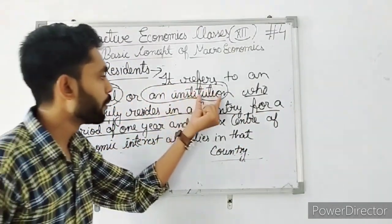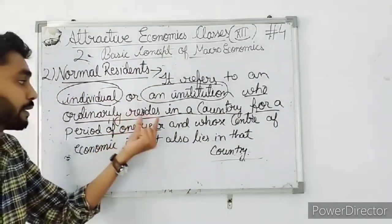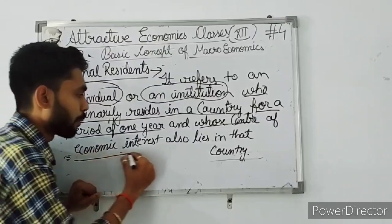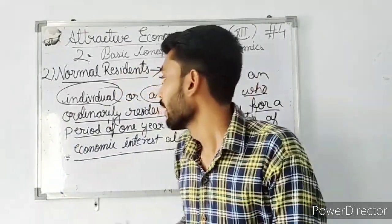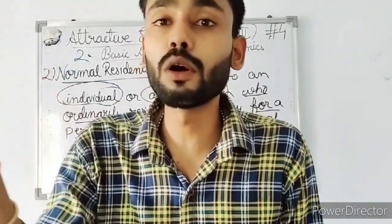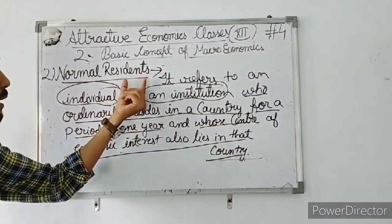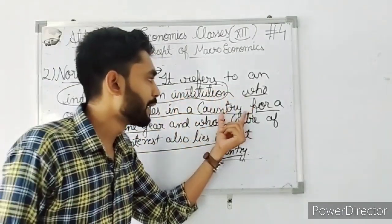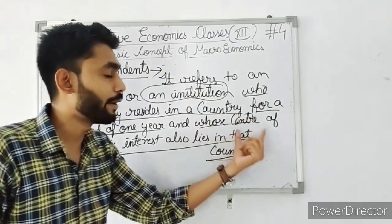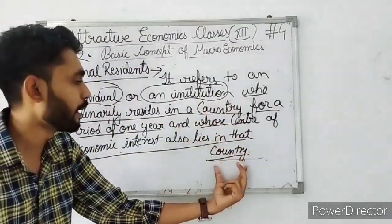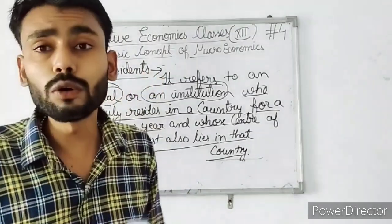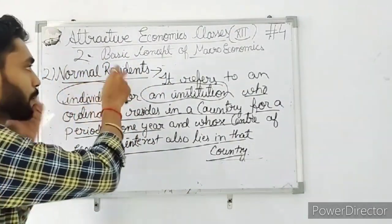And whose center of economic interest also lies in that country — meaning the job or economic activity is in that country. So if these two conditions are fulfilled — residing for one year and center of economic interest in that country — then that person or institution will be called a normal resident.